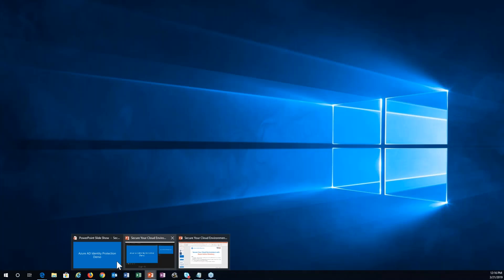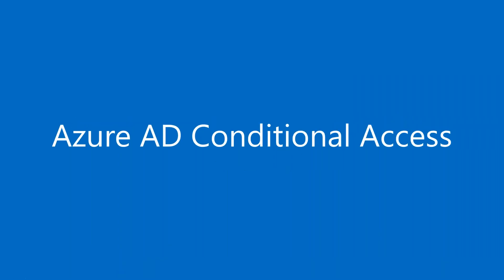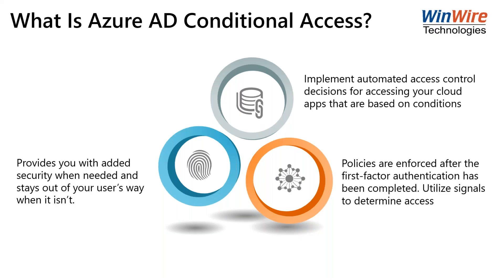Now let's talk about another feature of Azure Active Directory: Conditional Access. Conditional access is a capability of Azure AD where you can implement automated access control decisions for accessing your cloud applications — including Office 365, Azure, and other cloud applications — based on certain conditions. Access policies are enforced after the first factor authentication has been completed. Conditional access is not intended as a first line of defense against denial-of-service attacks, but it can utilize signals from those events such as sign-on risk level and location to determine access.